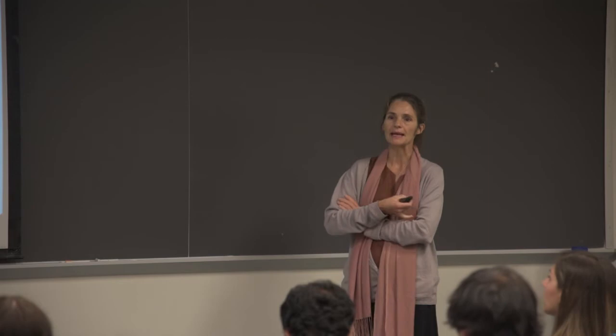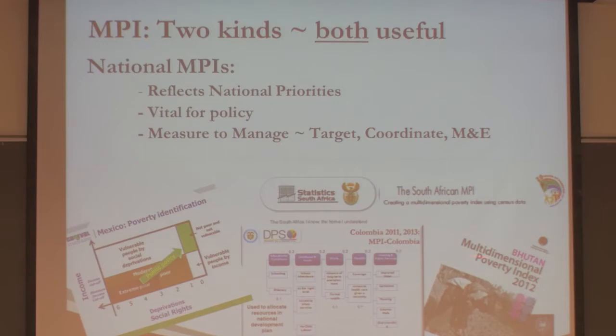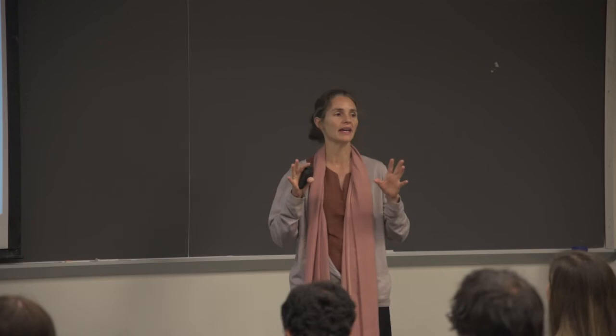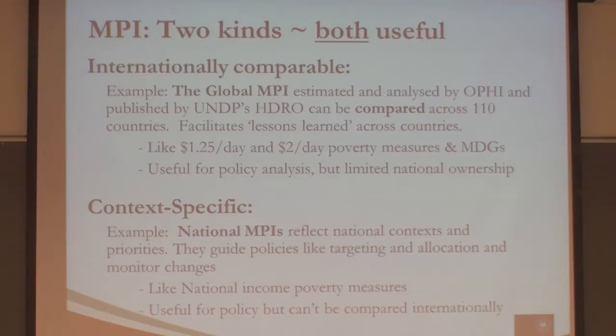Somebody mentioned the South Africa MPI, and there are some others. What I'd like everyone to do is remember the distinction, because it's one of the most common confusions we find — people confuse the global MPI and the national MPI. The national MPI is context-specific, with different numbers of indicators, different dimensions, different purposes, different frequencies of being updated, so they're much more flexible and agile.